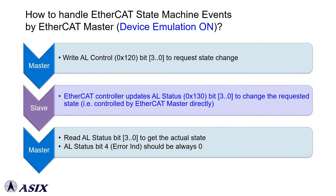After enabling EtherCAT Slave device emulation mode, the EtherCAT Master can control the EtherCAT Slave state machine by writing the AL control register directly.